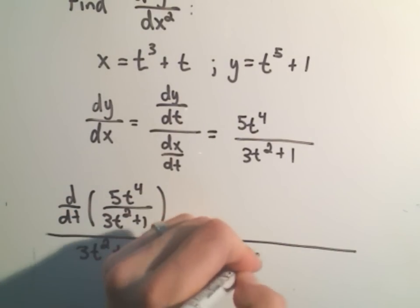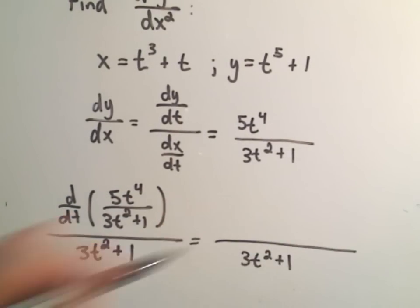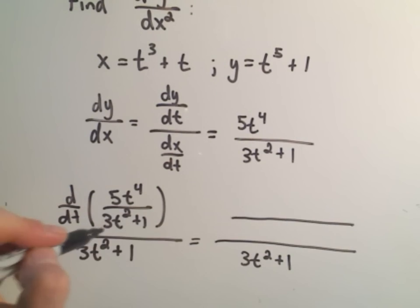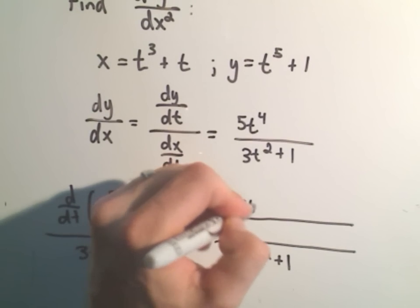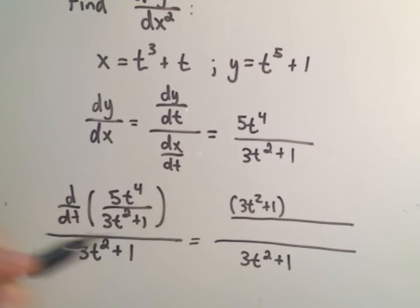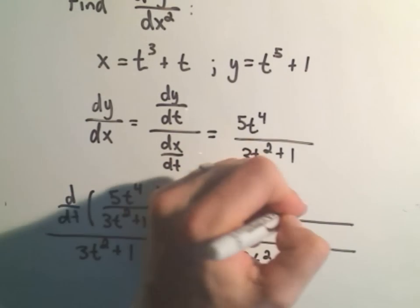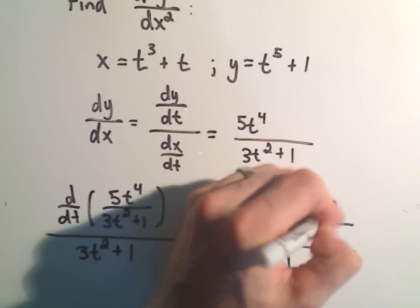So in the numerator, I'll just use the quotient rule. So it says you get the bottom, 3t squared plus 1 times the derivative of the top, which is 20t cubed,